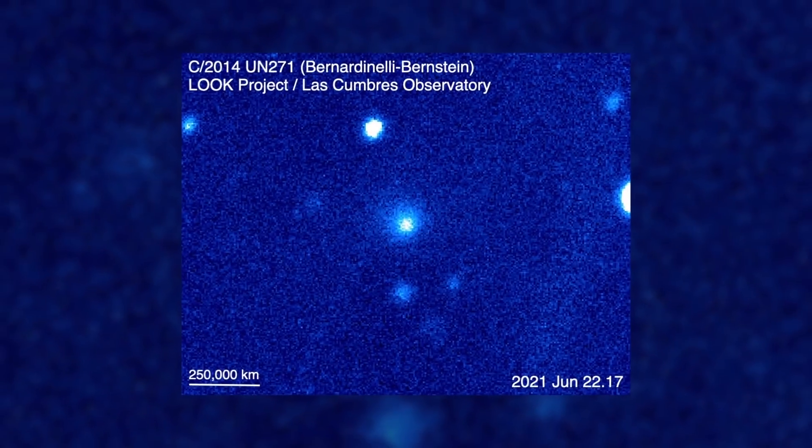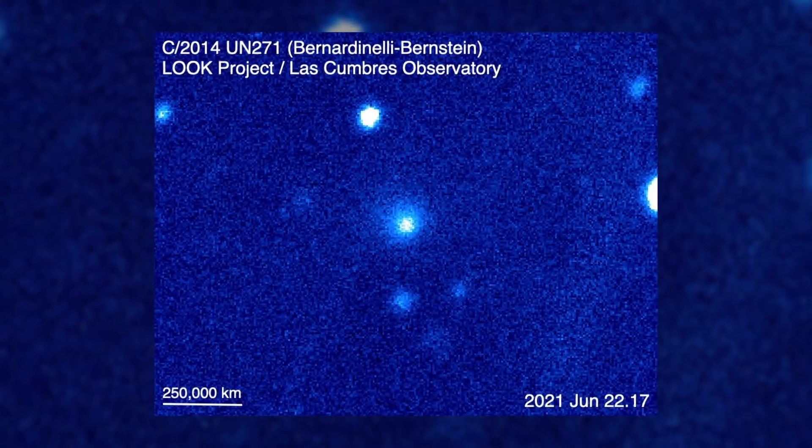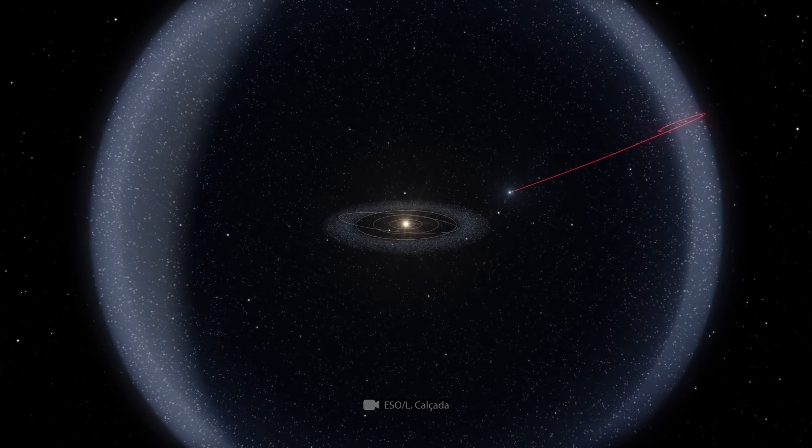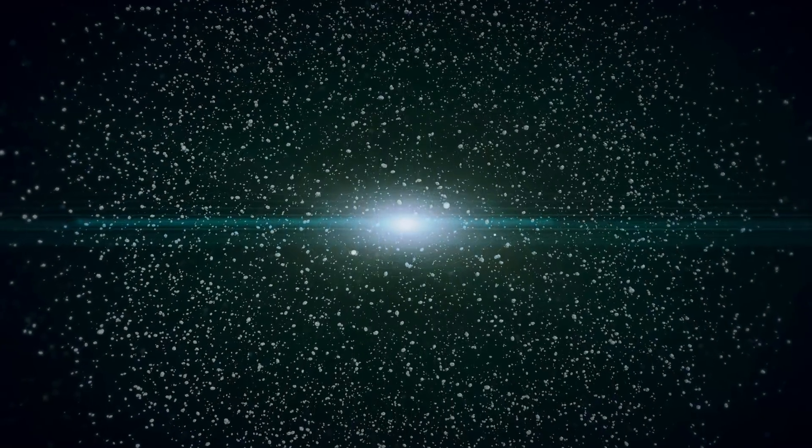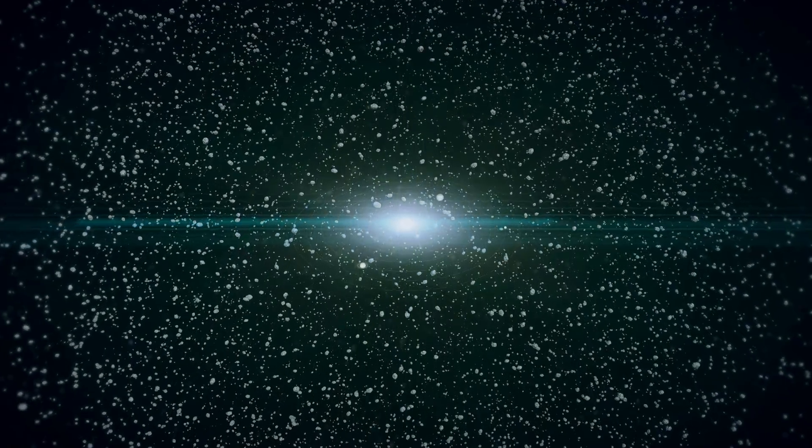This is the largest registered object that has ever come to our planet from the Oort cloud. This cloud is the most distant part of our solar system, a spherical shell made up of trillions of icy comets that completely surrounds our solar system.